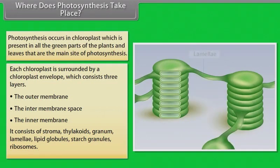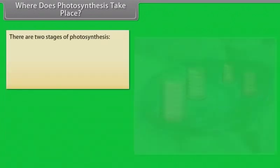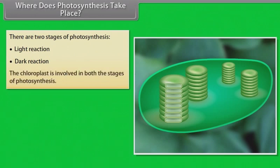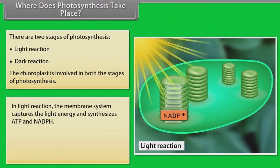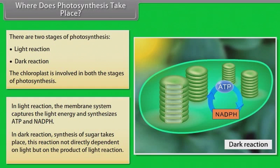The chloroplast also contains lamellae, lipid globules, starch granules, and ribosomes. There are 2 stages of photosynthesis: the light reaction and the dark reaction. In the light reaction, the membrane system captures light energy and synthesizes ATP and NADPH. In the dark reaction, synthesis of sugar takes place — this reaction is not directly dependent on light, but on the products of the light reaction.